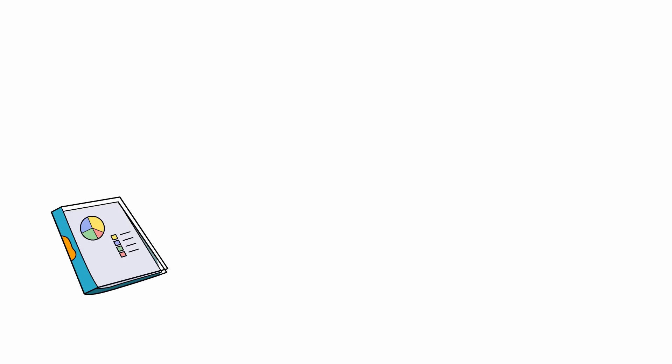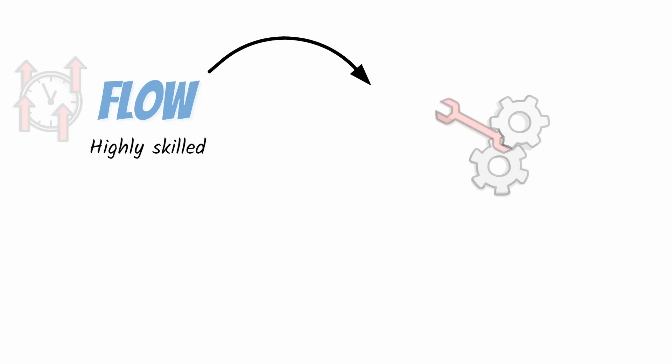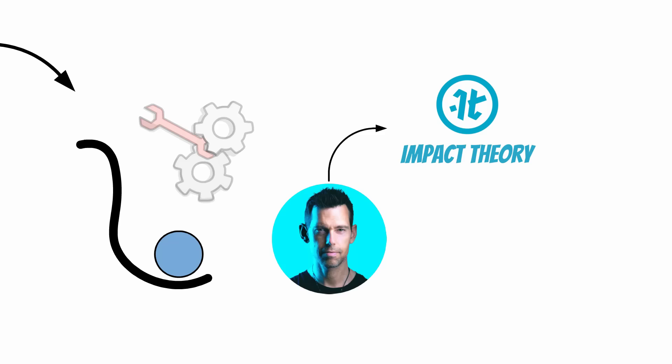Research shows that the happiest people do not achieve the most, but spend the most time in a state of flow. Those who experience the most flow are usually really good at something and lose track of time while doing it. Therefore, to find flow, challenge yourself to develop enough skill so that one action flows effortlessly into the next. Tom Bilyeu, the founder of Impact Theory, stresses the importance of learning skills that have utility. These are skills that allow you to be more productive and influential.